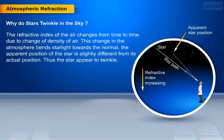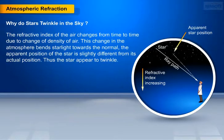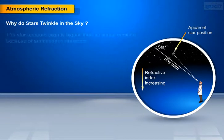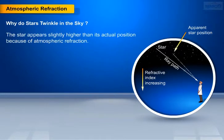This change in the atmosphere bends starlight towards the normal. The apparent position of the star is slightly different from its actual position. Thus the stars appear to twinkle. Please note that the star appears slightly higher than its actual position because of atmospheric refraction.